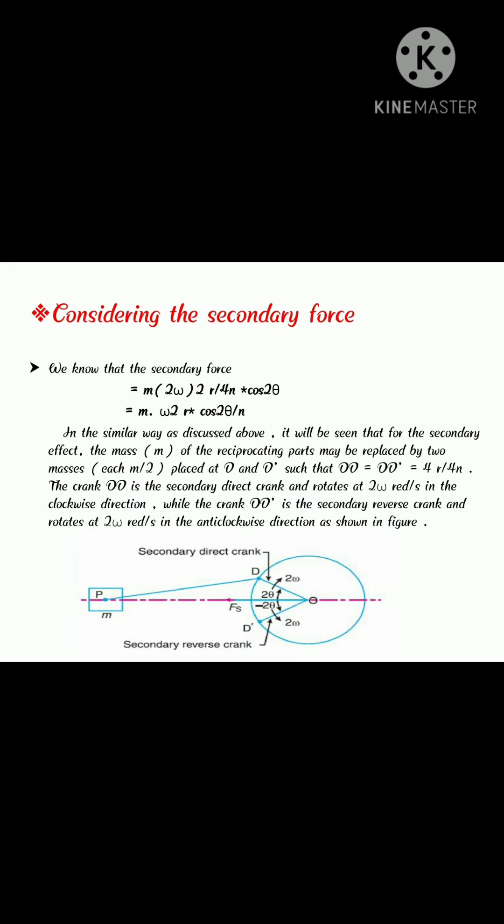Now, considering secondary forces. We know that the secondary force equal to M 2 omega square R by 4N into cos 2 theta equal to M omega square R cos 2 theta by N. In the similar way as discussed above, it will be seen that for the secondary effect, the mass of the reciprocating parts may be replaced by two masses each M by 2 placed at D and D dash.